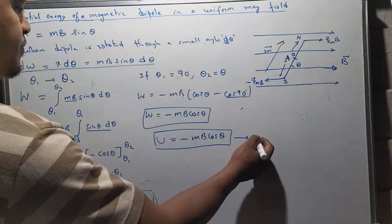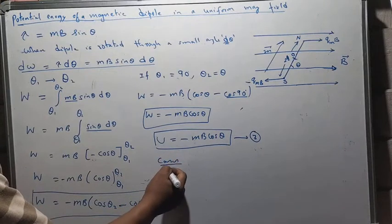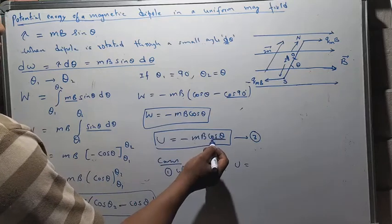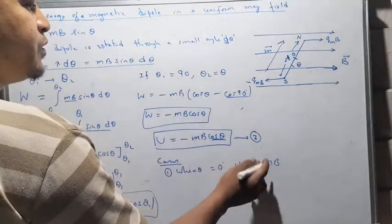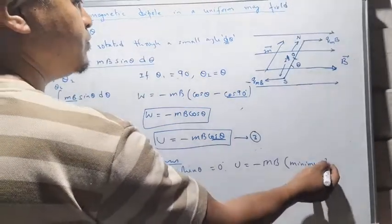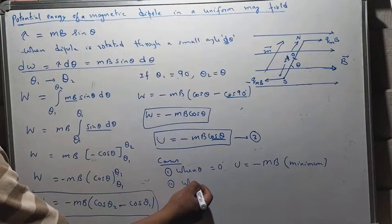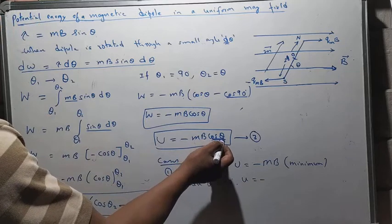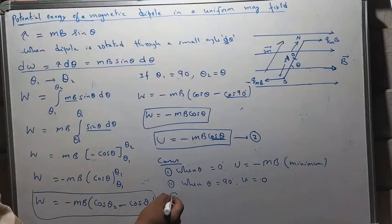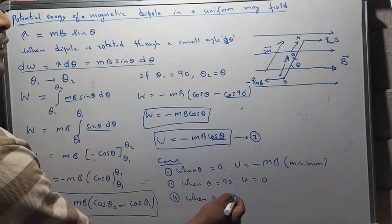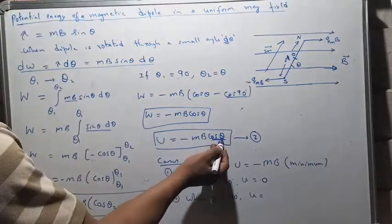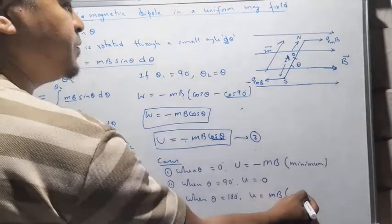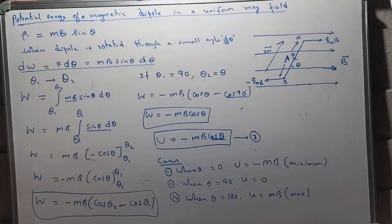We can draw three special cases from this equation. Case 1: when θ = 0°, U = -mb cos0° = -mb, which is minimum. Case 2: when θ = 90°, U = -mb cos90° = 0. Case 3: when θ = 180°, U = -mb cos180° = -mb × (-1) = +mb, which is maximum.